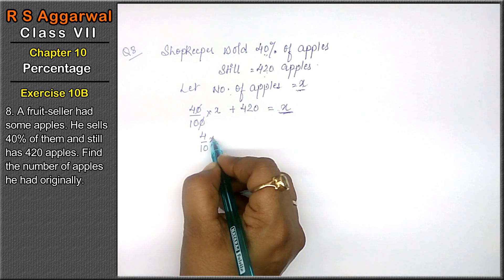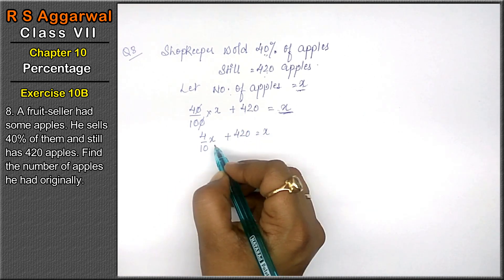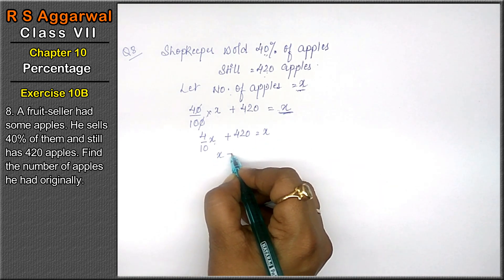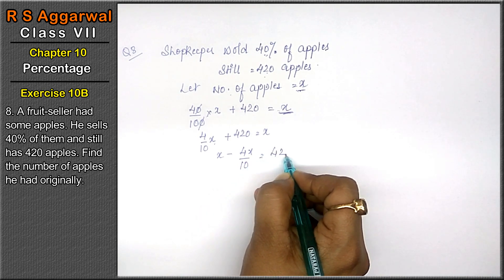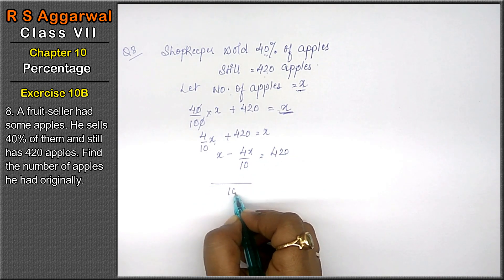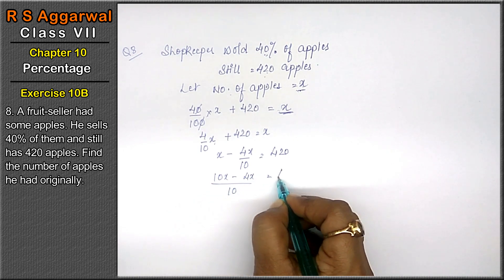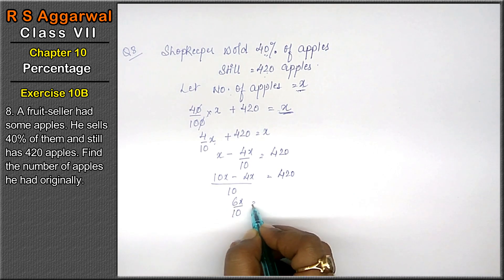4 upon 10x plus 420 equals x. x minus 4x upon 10 equals 420. LCM is 10. 10x minus 4x equals 420. 6 upon 10 equals 420.